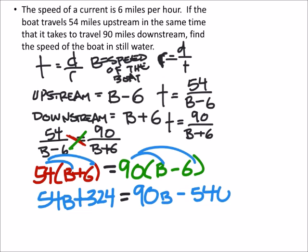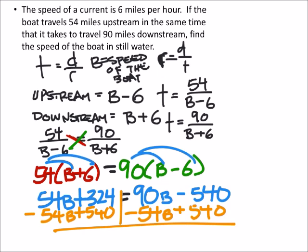I want the B's on the same side of the equal sign, so I'm going to subtract 54B because I'm putting them on the right side of the equal sign. This is just solving an equation. I'm also going to add the 540 to both sides, and that gives me 864.